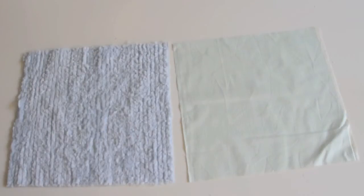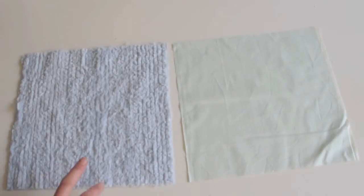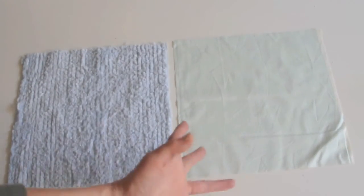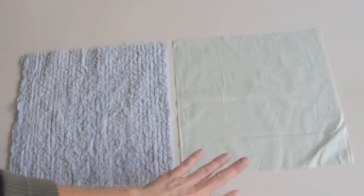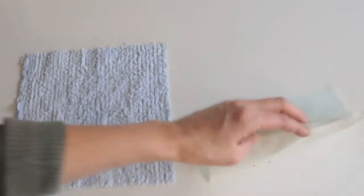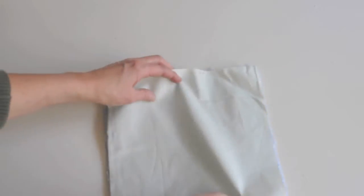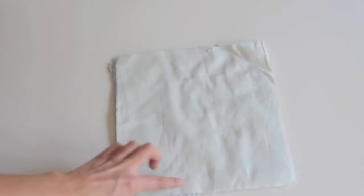So what you'll need is two pieces of fabric, one piece of terrycloth and then one piece of whatever fabric you want. I like 100% cotton. I cut mine 10 by 10 inches and then you just do right sides together and you're going to want to stitch along the outside.